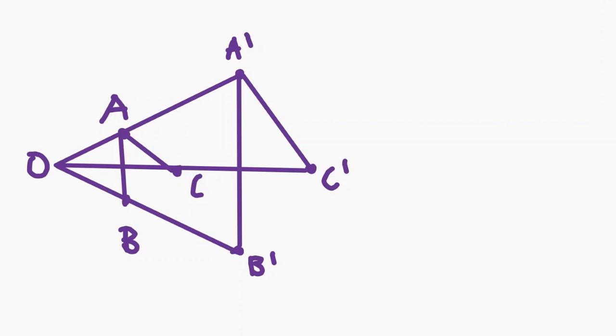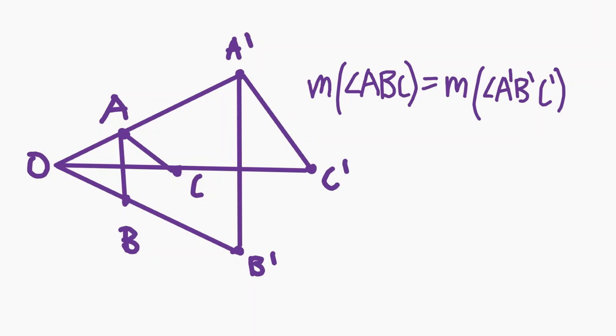Another thing to note is that homothety preserves many of the properties of the original figure. Since corresponding lines are parallel under a homothety, we also know that angles are preserved under a homothety. Because of this, things like tangent lines are also preserved under a homothety.